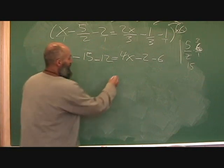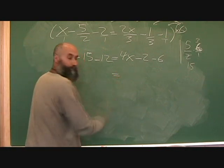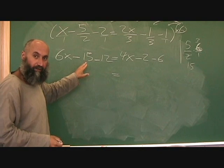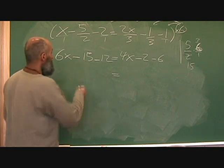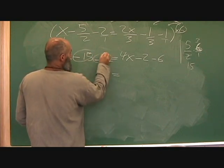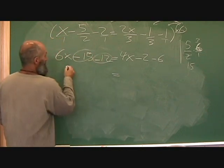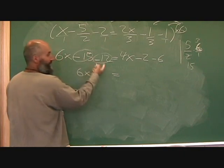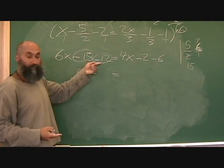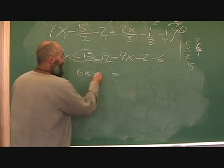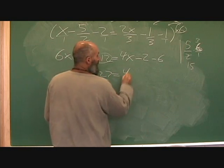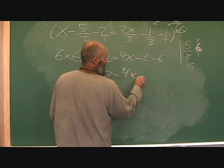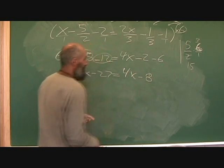Now line up your equal sign and combine your like terms on either side of the equation. This adds to this: six x, minus - negative fifteen minus twelve is negative twenty-seven. On the other side: four x minus eighteen.